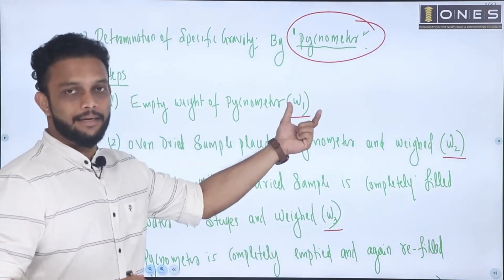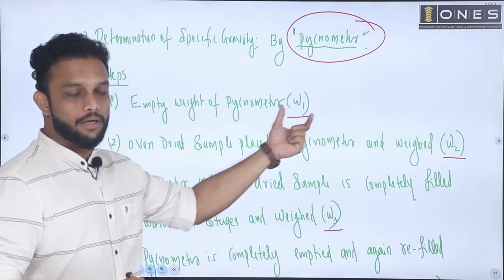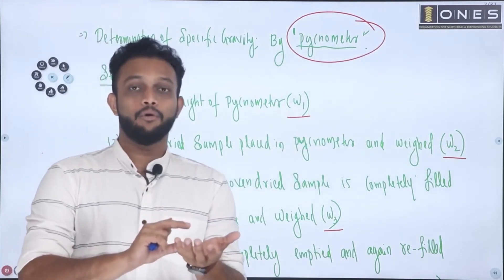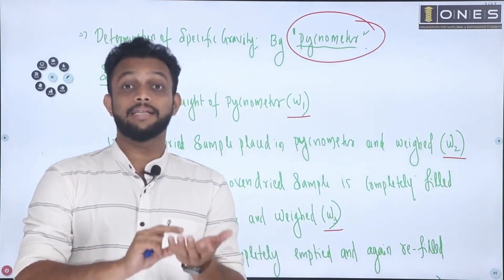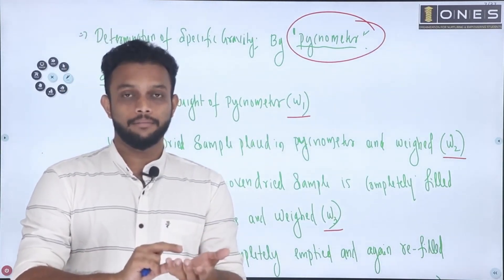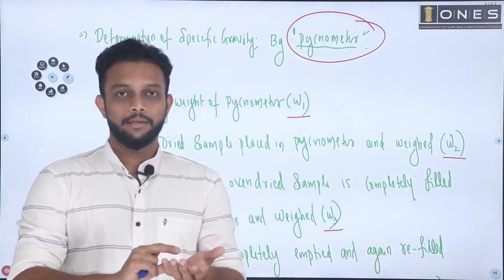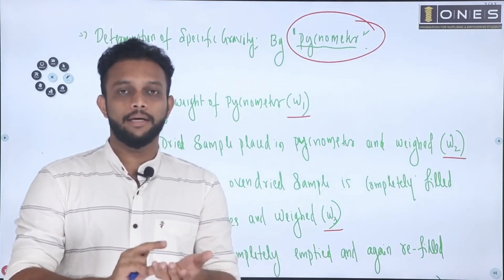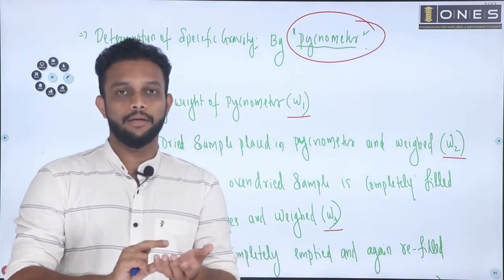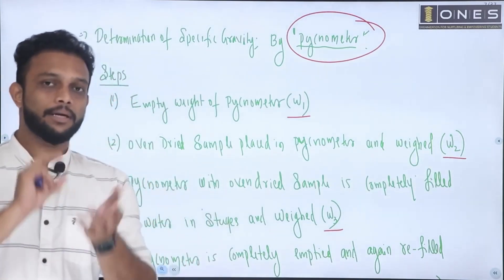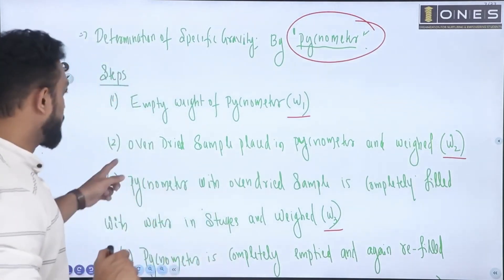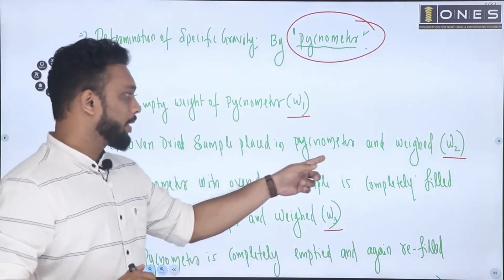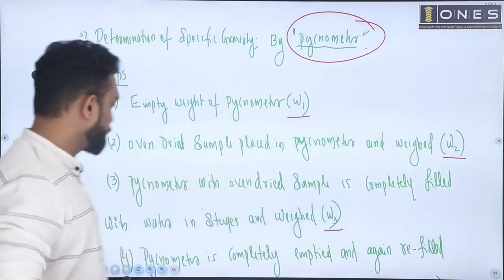Step two: the pycnometer is filled with the oven-dried soil sample. The solid soil sample is placed in the pycnometer and weighed. That weight is W2.